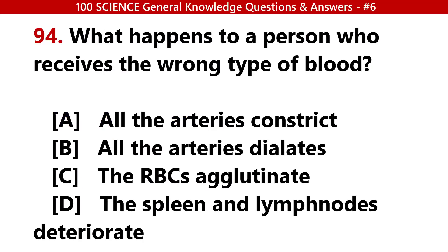What happens to a person who receives the wrong type of blood? Answer C: The red blood cells agglutinate.